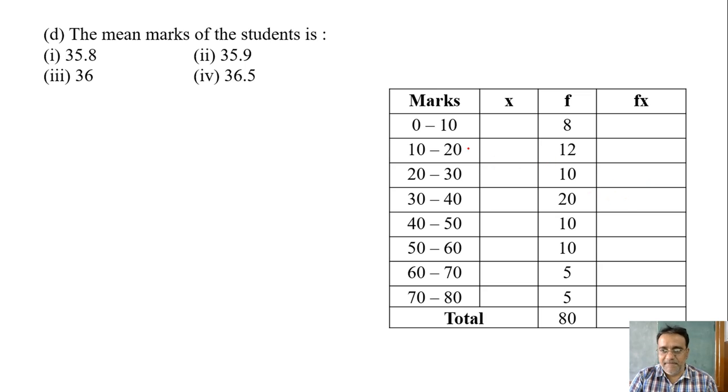All the class sizes are same, so first calculate the first class mark. What is the first class mark? 5, then 15, 25, 35, 45, 55, next 65, next 75.